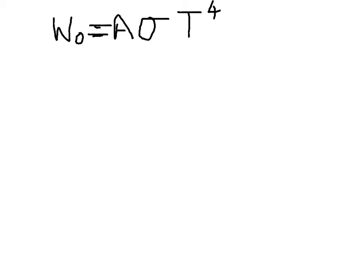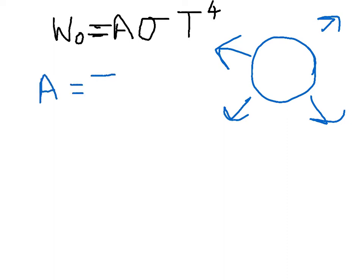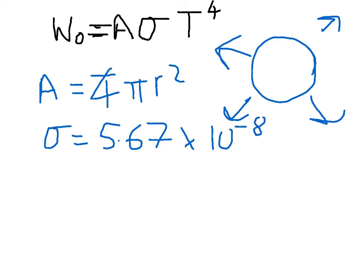So in this case, what's the area? Now the Earth is radiating from all sides. It's radiating in all directions. So the area is surface area of a sphere, which is 4 pi r squared. Sigma is the Stefan-Boltzmann constant, which is equal to 5.67 by 10 to the minus 8 watts per metre squared per Kelvin to the fourth.